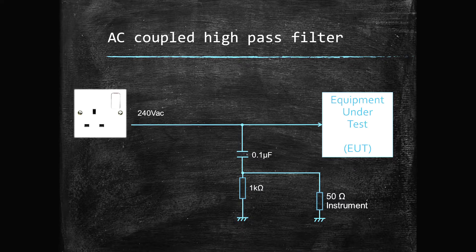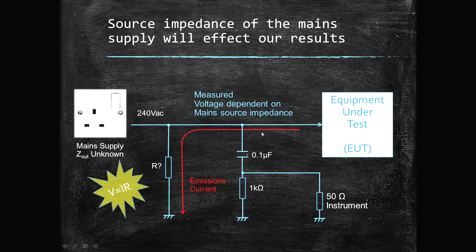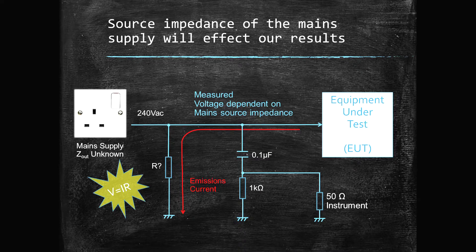The next problem, which is also addressed by the LISN, is the impedance of the AC mains supply. We're measuring the voltage coming from our equipment under test, but the emissions current is actually flowing back into the mains — the mains is the load for our emissions. If this is an unknown, uncontrolled impedance, that's going to affect the voltage we see. Your mains supply in this frequency range can range from a few ohms through to a few hundred ohms, completely dependent on the mains infrastructure in the building, where the transformer is, how long the cables are. So if we want repeatable measurements, we need to control this impedance.